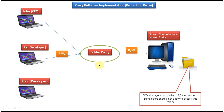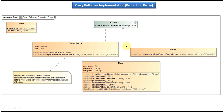Now we will see how we can do the class diagram for this scenario. At the top you can see the IFolder interface, which has a performReadOrWriteOperations method. This interface is implemented by two concrete classes: the first class is Folder and the second class is FolderProxy. Both classes provide an implementation of the performReadOrWriteOperations method.